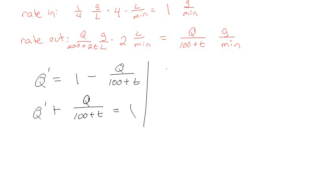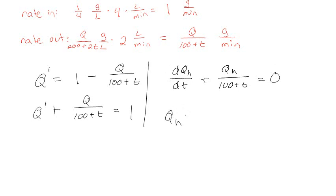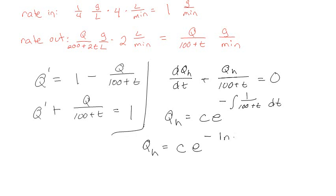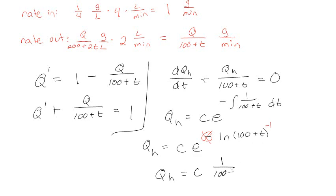Solve the homogeneous equation first: dQ_h/dt + Q_h/(100 + t) = 0. This is a non-separable equation, but I can solve it using standard techniques. Integrating the coefficient: the integral of 1/(100 + t) dt is the natural log of (100 + t). So Q_h equals some constant times e^(-ln(100+t)), which simplifies to C × 1/(100 + t).